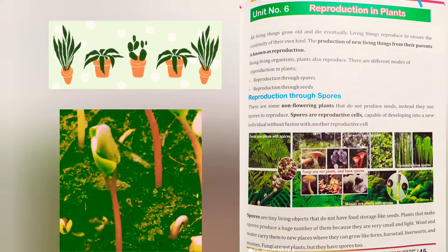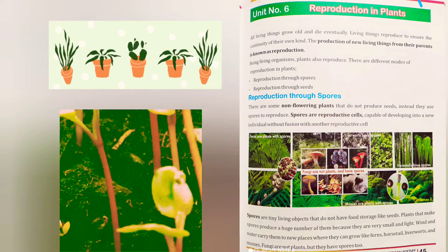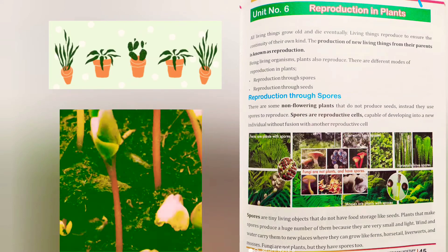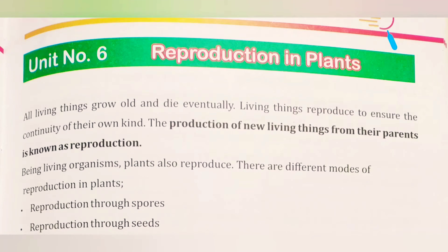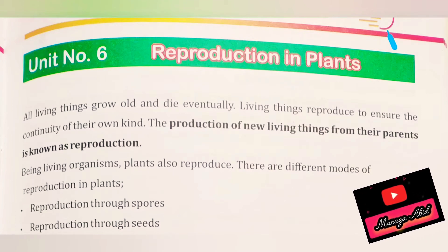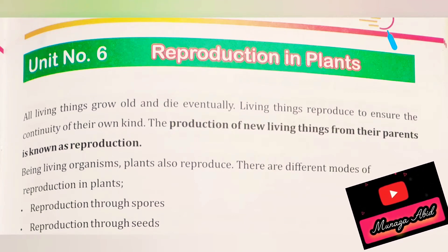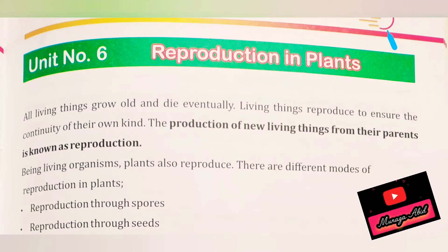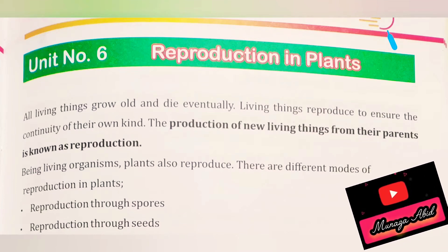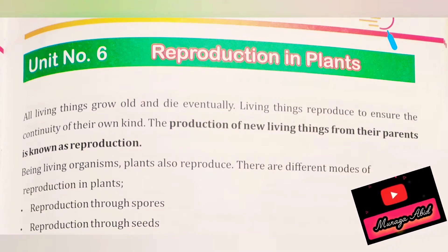Plants grow and die and ensure their continuity of life. This is a natural process. All living things grow old and die eventually. The production of new living things from their parents is known as reproduction.